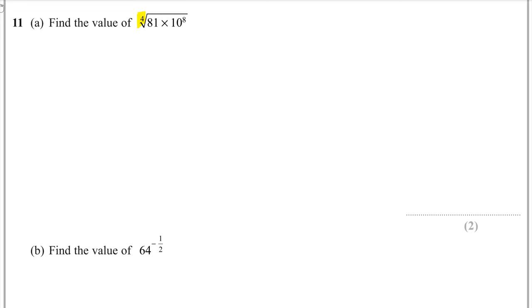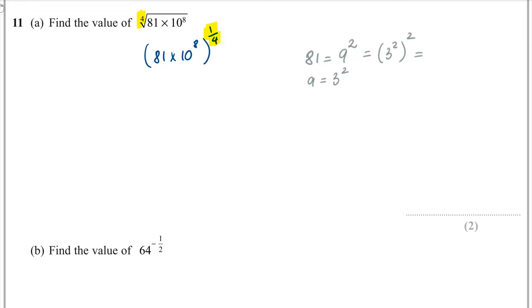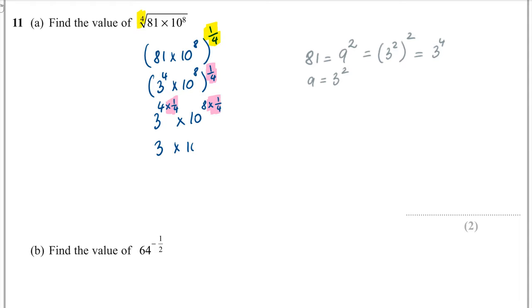Question 11. Find the value of the fourth root of 81 times 10 to the power of 8. Step 1: rewrite the root as a power — the fourth root is the power of one quarter. 81 is 3 to the power of 4 (since 3 squared is 9, and 9 squared is 81). Removing brackets by multiplying powers: 3 to the power of 4 times one quarter is 3, and 10 to the power of 8 times one quarter is 10 squared. This gives 3 times 100, which equals 300.